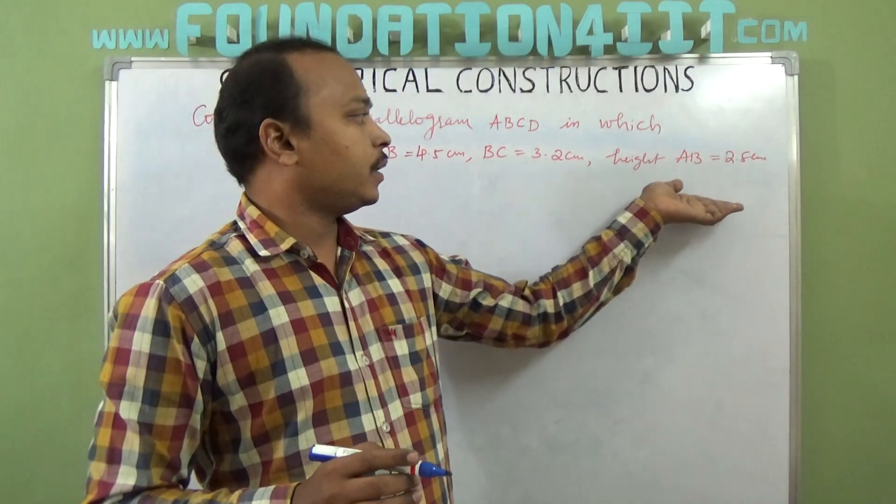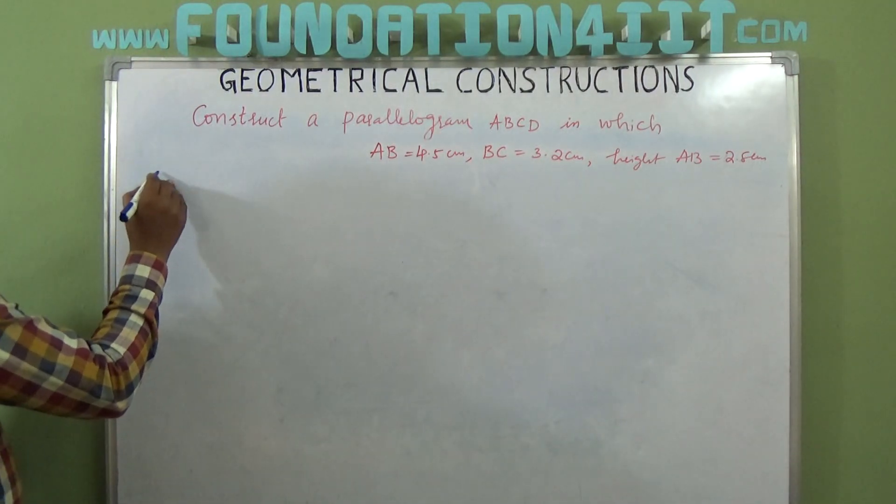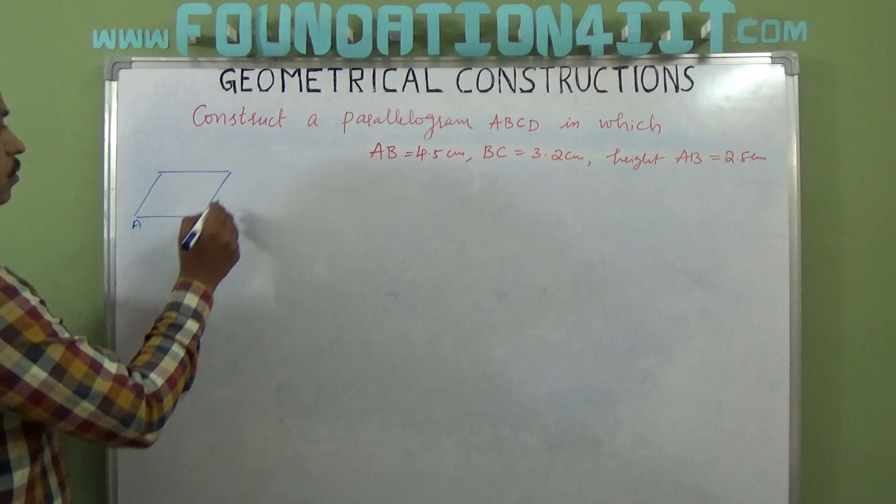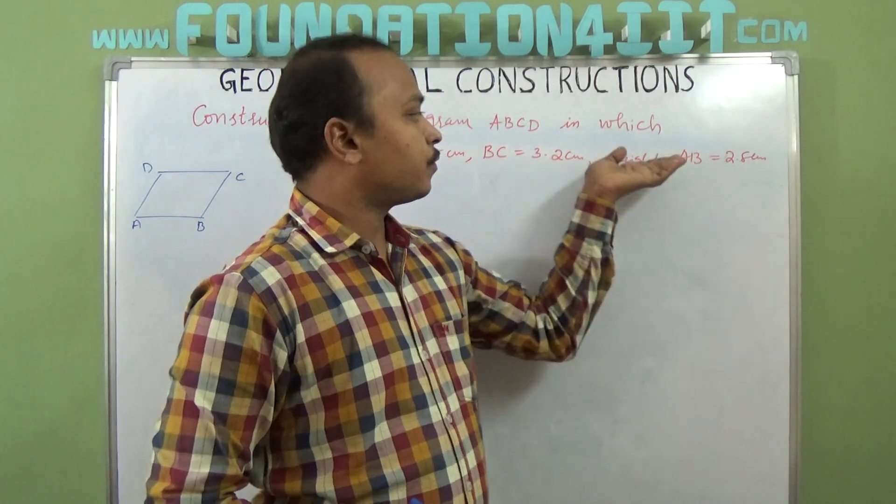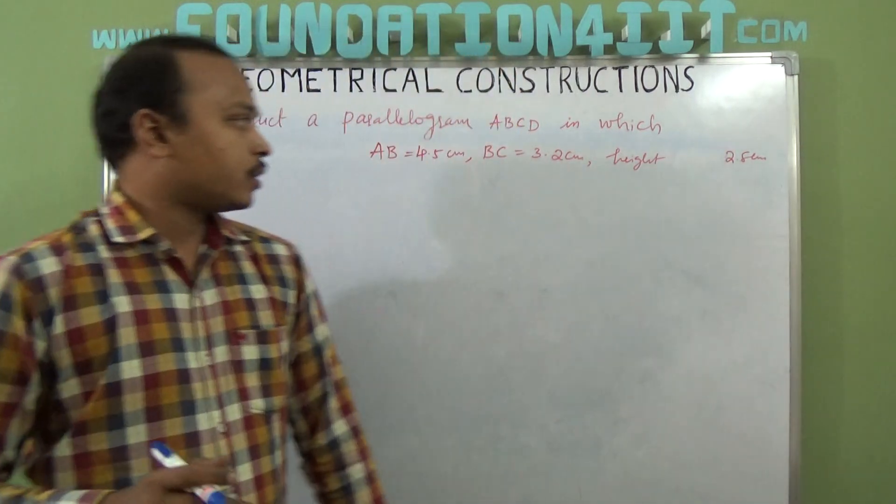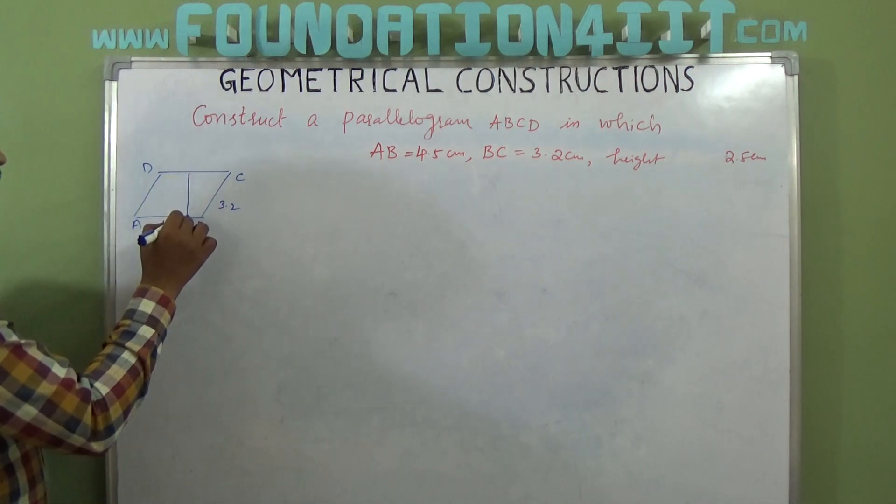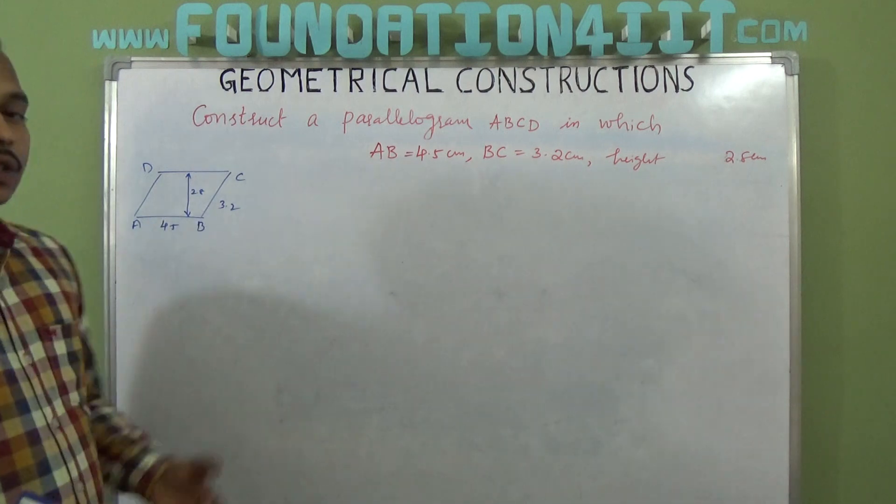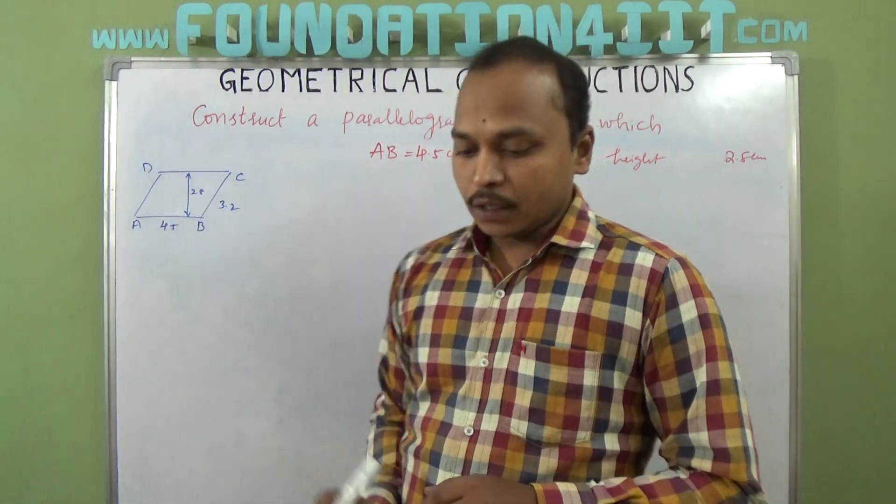A to B is 2.8 centimeters. Let's write a rough diagram. If you try a parallelogram ABCD, this is height from any parallel, so C to D is - AB is actually the height is equal to 2.8 centimeters. No, AB is 4.5 and BC is 3.2, and this is the perpendicular height. Height is 2.8, so distance between two parallel sides is 2.8 centimeters.